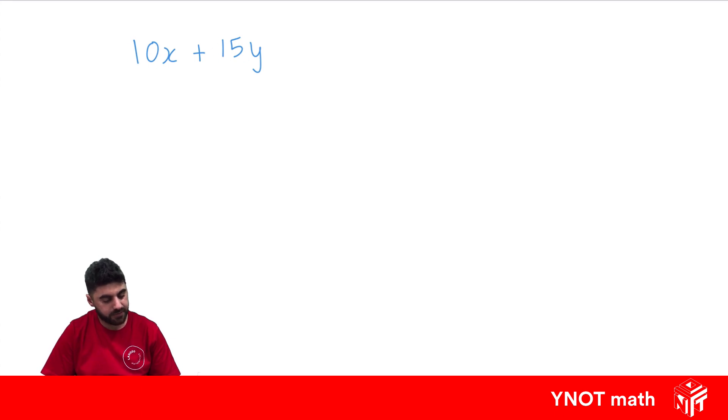And in this case, it's 5, because 5 goes into 10 and 5 goes into 15. So let's take a 5 outside a bracket. What do we need to multiply by 5 to get back to 10x? Well, we're going to need 2x.